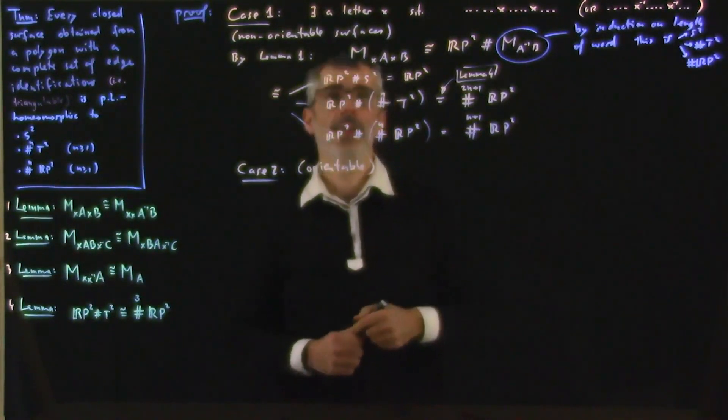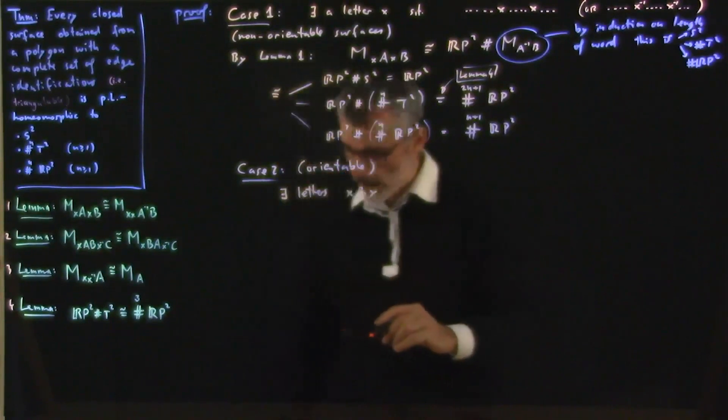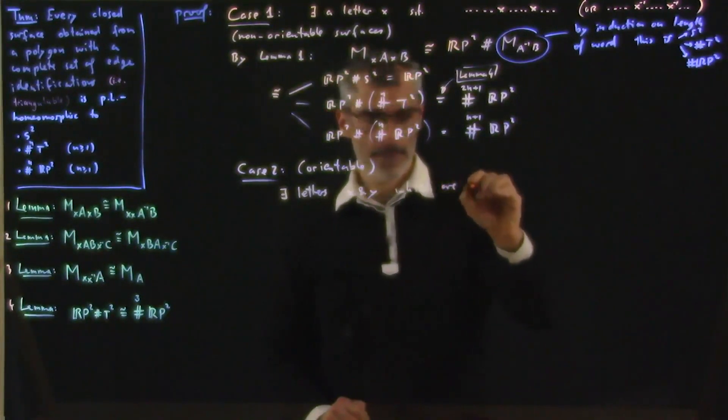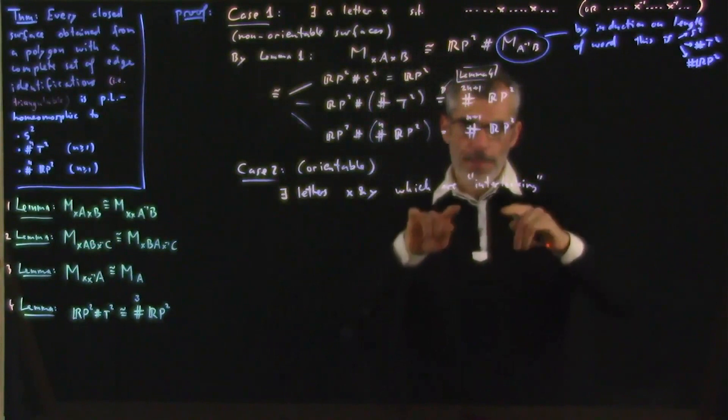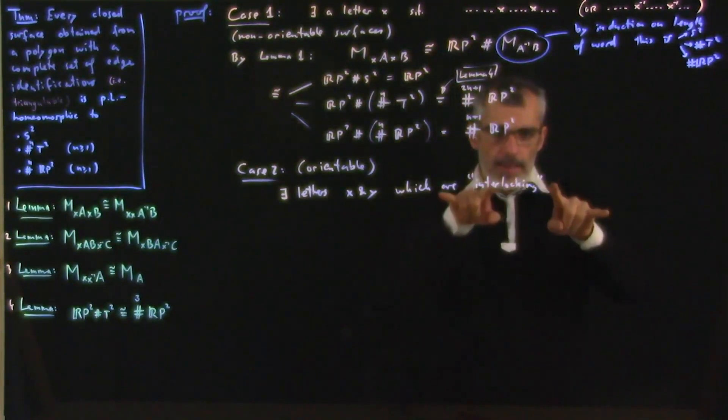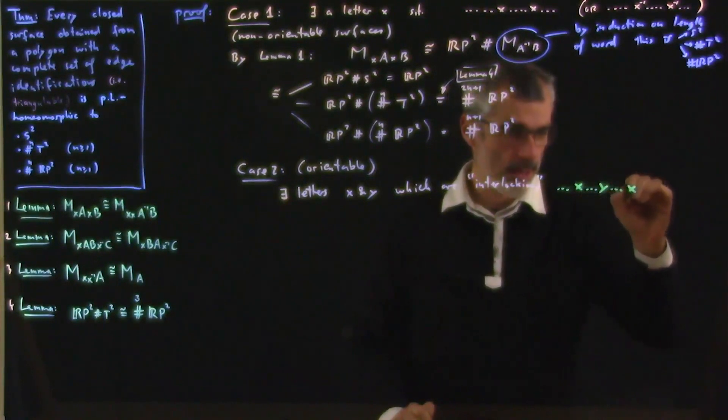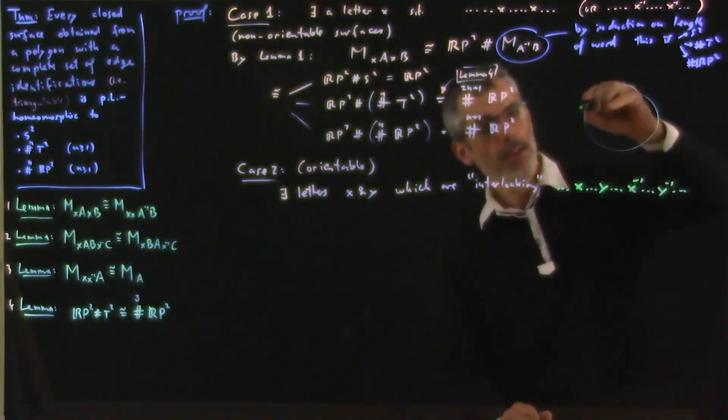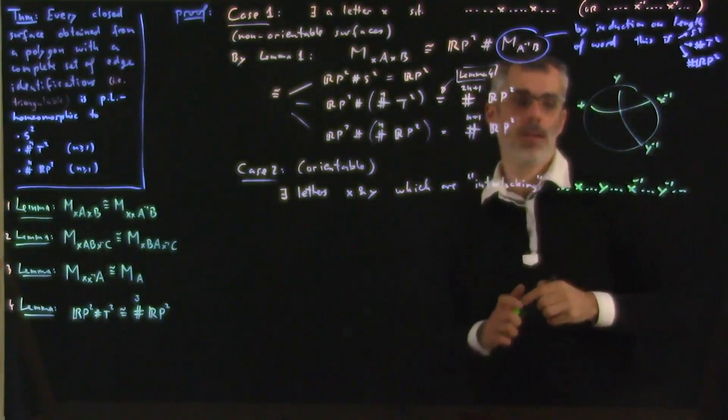So now I'm going to assume that there exists two letters, x and y, which are interlocking. And what do I mean by interlocking? I mean that they appear, if you draw your words cyclically, they appear not like that, but like that. So something x and then y and then x inverse and then y inverse. So that's what it means that they're interlocking. Or if you draw them on the surface of a circle, then you have the x and the x inverse pair somewhere, then the y and the y inverse pair somewhere. And if you draw a line that connects them, these two lines cross. That's what it means to be interlocking.